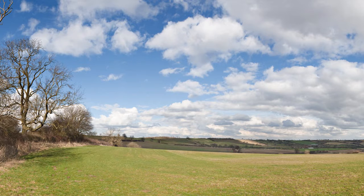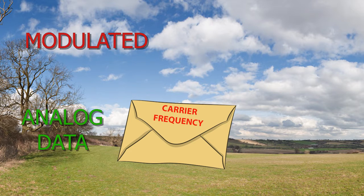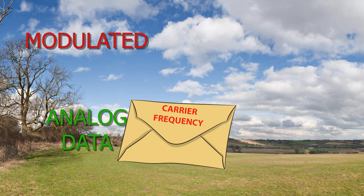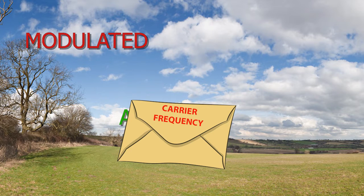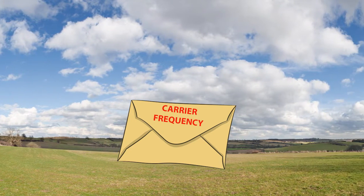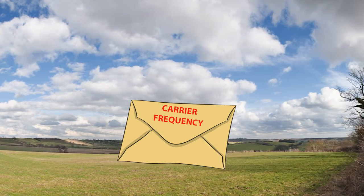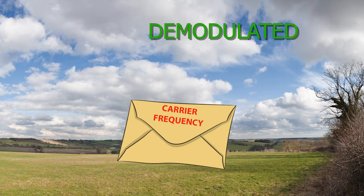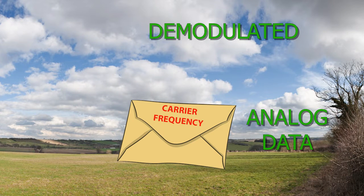So how can digital data be sent through an analog radio wave? When analog data is modulated, it is encoded to a frequency that acts as a carrier. When the signal reaches its destination, the signal is demodulated, stripping the carrier frequency and leaving the information being sent to be accessed.